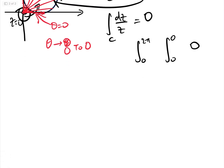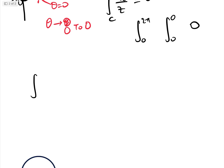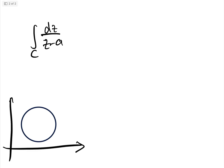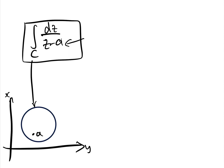Let's return to the main question: the integral of dz over z minus a for some point a. Here is the Argand diagram with a circle, and let's imagine the point a is inside the circle. Because a is inside, we cannot use Cauchy's Theorem, since one over z minus a is not analytic everywhere inside that curve — there is a singularity at z equals a. Therefore we evaluate by substitution.